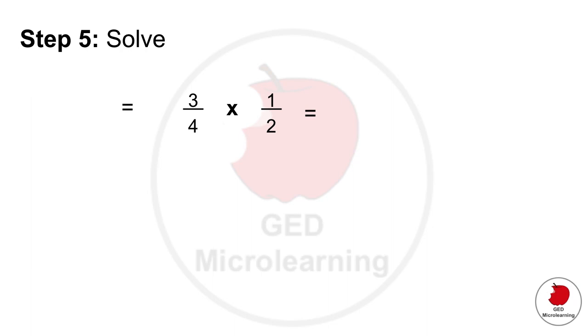And then the final step is to solve so you would multiply across three times one at the top is equal to three and in the bottom you end up with four times two which is eight. So basically he needs three eighths of a cup of strawberries for half of the recipe.